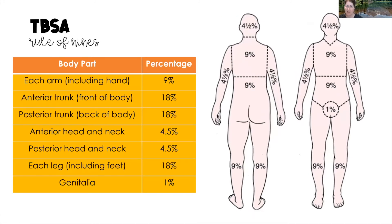This slide shows those values in a table for easier reference. To recap: each arm is 9%, anterior trunk 18%, posterior trunk 18%, anterior head and neck four and a half percent, posterior head and neck four and a half percent, each leg 18%, and the genitalia 1%. Keep in mind many of these areas can be subdivided into smaller percentages.